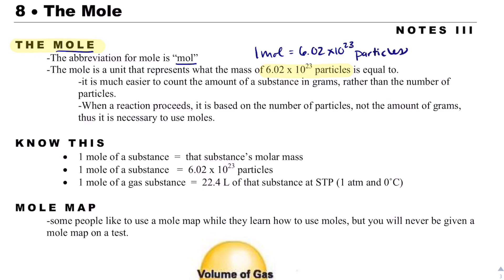We use a mole because it's going to be much easier to count the amount of substance we have in grams, and we prefer to use grams because we can measure those in lab, rather than the number of particles. However, when a reaction proceeds, it's going to be based on the amount of particles you have, not the amount of grams. So we need a way to convert between grams and particles.